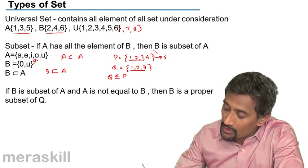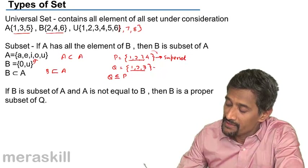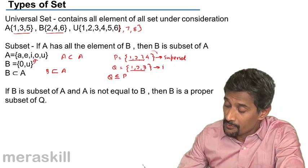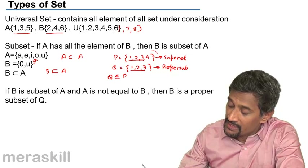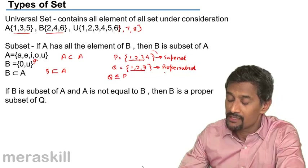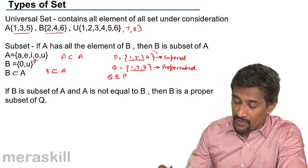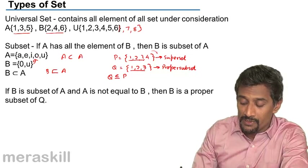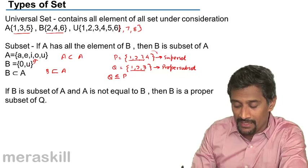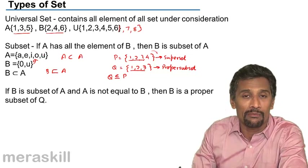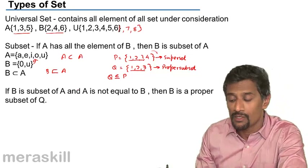There is a special type of subset which is a proper subset — a proper part of the set. In that case, the containing set is called the superset. If set B is a proper subset of set A, then set A is the superset and B is the proper subset. A has all the elements of B and at least one or more additional elements.